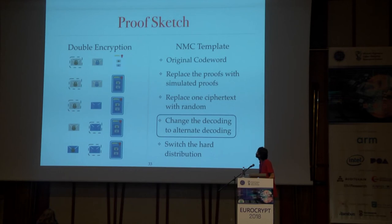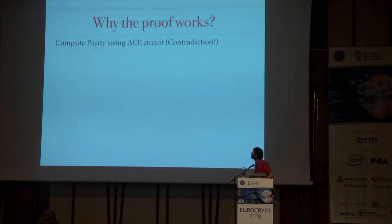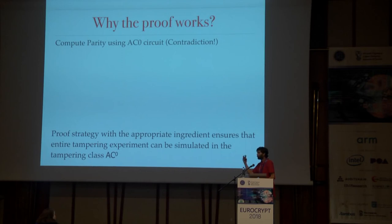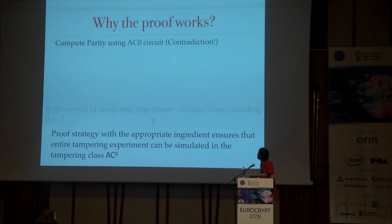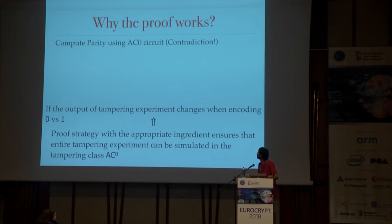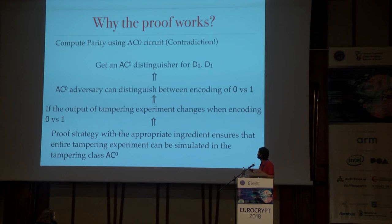Why does this proof work? In order to show it works, we need to show that we can compute parity using an AC0 circuit — but that would be a contradiction. Basically, the proof strategy, when instantiated with appropriate ingredients, ensures that the entire tampering experiment can be simulated in the tampering class AC0. What this means is that if the output changes when we start with the encoding of 0 instead of encoding of 1, then we have an AC0 adversary who can distinguish between encoding of 0 and 1. Specifically, this means we can distinguish between D0 and D1 using an AC0 circuit, and that means we can compute parity, since these distributions are exactly parity-based. That's the contradiction.